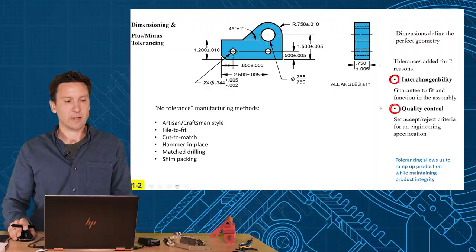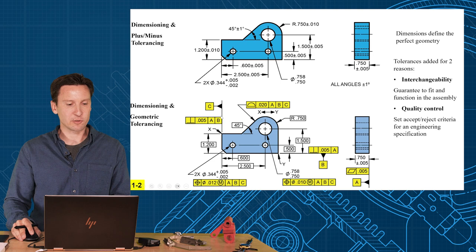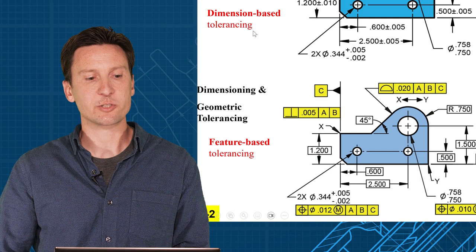Now this is the old style of tolerancing, called plus-minus tolerancing. It was invented in the mid-1800s and we found a lot of problems with plus-minus tolerancing. So in the last 100 years or so, we've been switching over to geometric tolerancing. Geometric tolerancing is applying tolerances to all the features. Every hole, every slot, every surface will get a tolerance instead of all the dimensions.